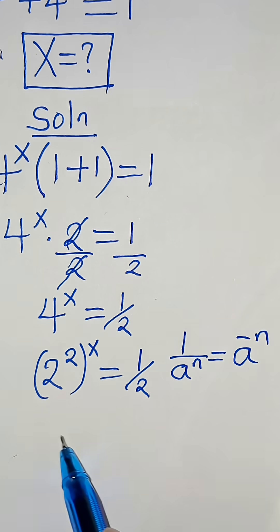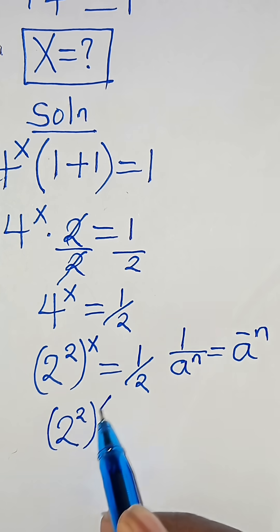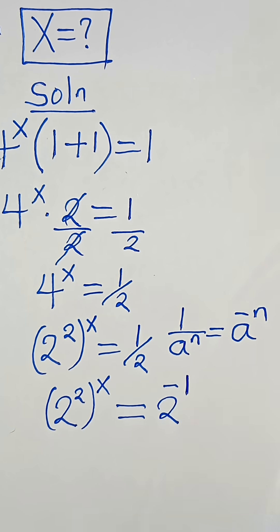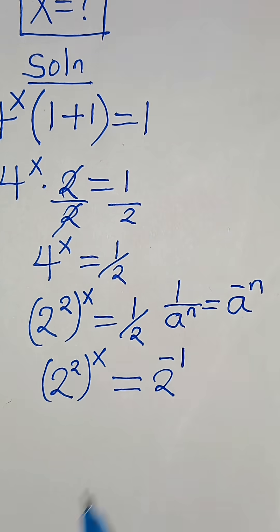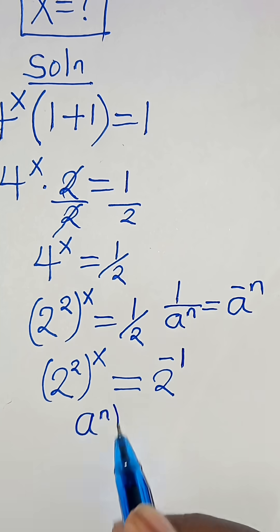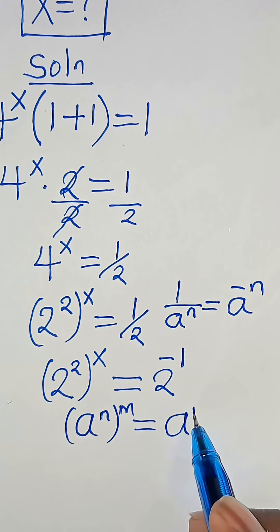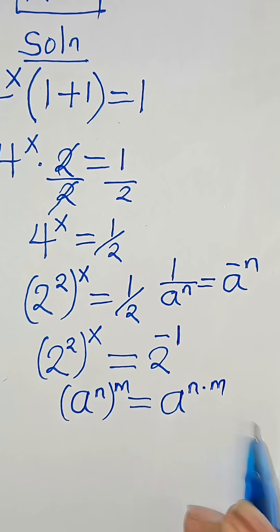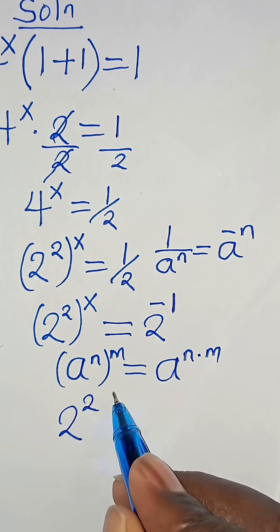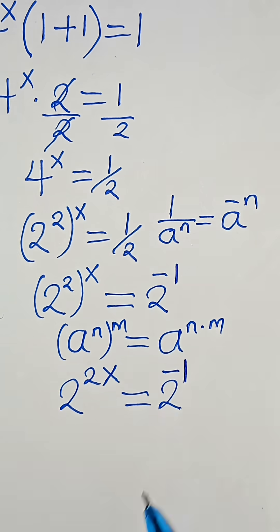Applying this property, we have 2 to the power of 2, raised to the power of x, equal to 2 to the power of minus 1. Now, 2 to the power of 2 raised to the power of x is in the form a to the power of n raised to the power of m, which we can express as a to the power of n times m. So we have 2 to the power of 2x equals 2 to the power of minus 1.